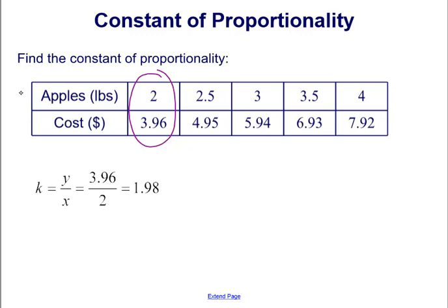So again, when X being the amount of apples and Y being the cost, the constant of proportionality, K, would equal Y over X, which is 3.96 over 2, which equals 1.98 technically over 1. So that constant of proportionality, finding that ratio of Y over X for any of the given amounts in the table.